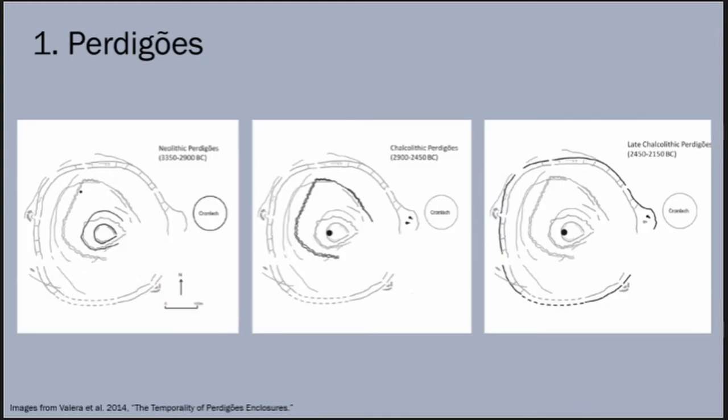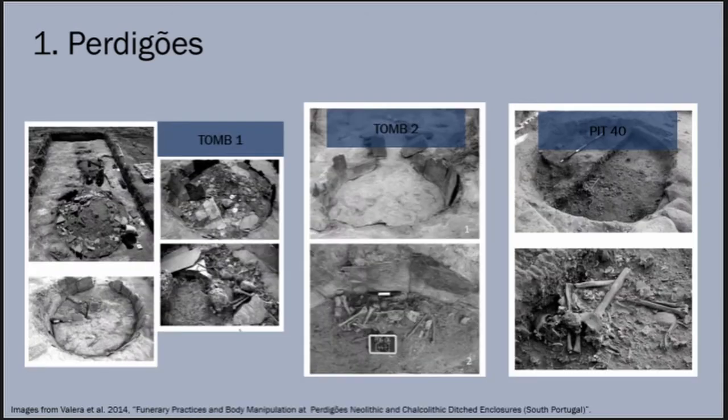Mortuary practices at Perdigoix were highly variable, with human remains deposited variously in tombs, pits, and the enclosure ditches themselves. Both Tombs 1 and 2 show evidence of secondary depositions, and several ossuaries were identified at Tomb 2. Small numbers of human bones were found in votive deposits in Ditches 3 and 4, intermixed with faunal remains, lithic materials, and bits of copper.